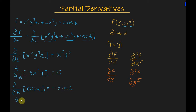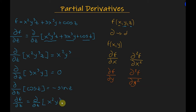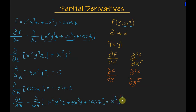So the partial derivative of the function f with respect to z of the whole function x squared y cubed z plus 3x cubed y plus cosine z is equal to x squared y cubed minus sine z. So this is it for this video.